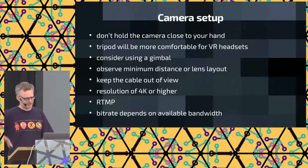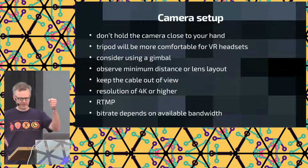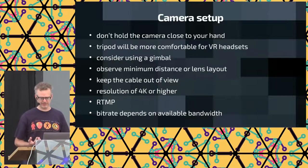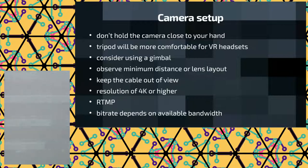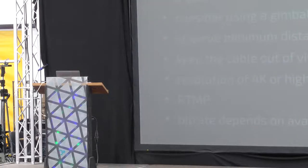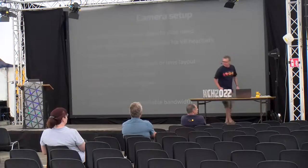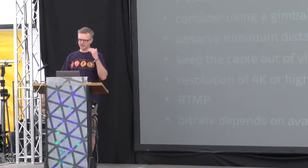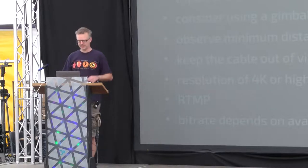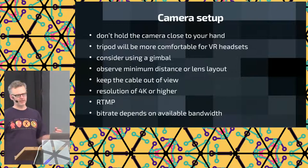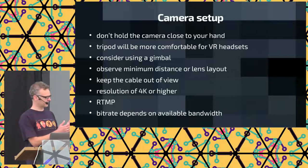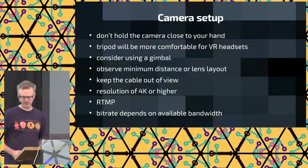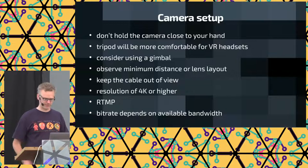Some practical advice: if you have a 360 camera, don't hold it directly in your hand, because your hand will be so close to the camera it will look really creepy. Ideally put it on a tripod, because if people watch your video on a VR headset they might get sick if it's shaking too much. If you want to hold it in your hand, use a gimbal and make sure you observe the minimum distance. This camera also has a quite large minimum distance, but if you make sure you're not on top of one of the stitching lines between the lenses, you can get away with being closer than the minimum distance without being cut off.